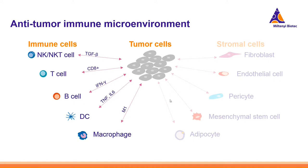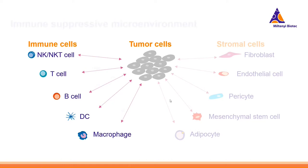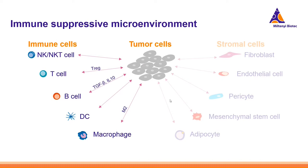Some characteristics of an anti-tumor microenvironment include, for example, the presence of CD8-positive T cells or M1-like macrophages. On the other end of the scale is an immunosuppressive microenvironment, where immunomodulatory effects of tumor and stromal cells cause the recruitment of cells that hinder an effective immune response against the developing tumor. This can be characterized by the presence of regulatory T cells and M2-like macrophages.